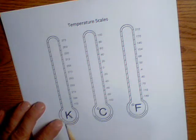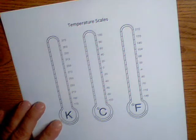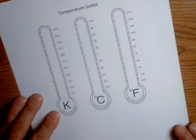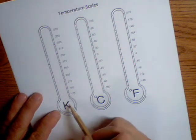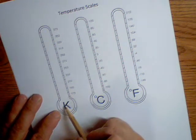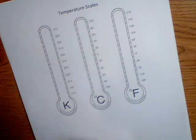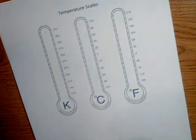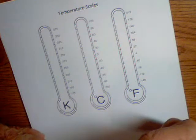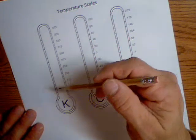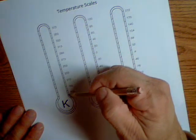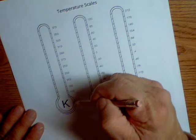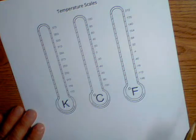Kelvin, because temperature is a measure of kinetic energy, Kelvin brilliantly decided to come up with a zero point where there's no movement. He theoretically said that zero is the absence of any particle movement.